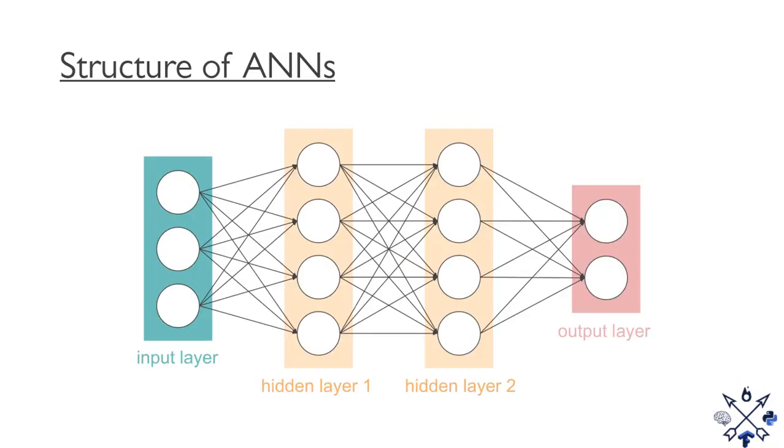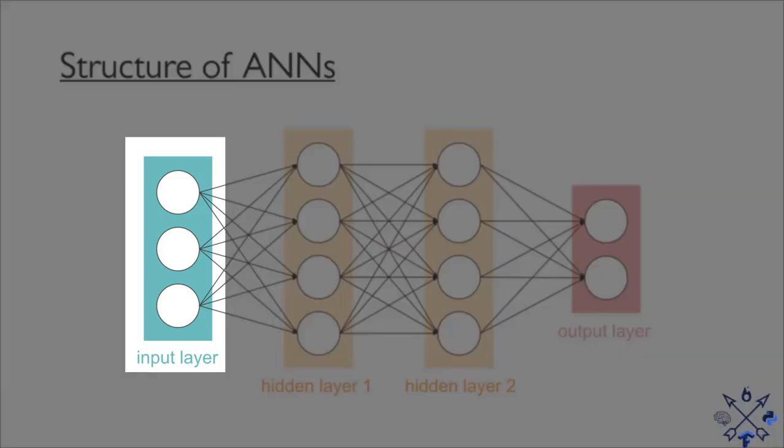Now we'll take a look at what these networks look like and how they are structured. The basic structure of an artificial neural network consists of these nodes or neurons grouped into layers.